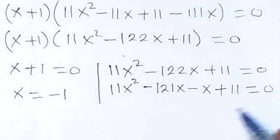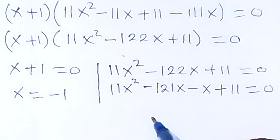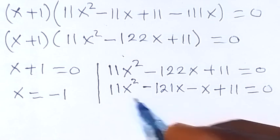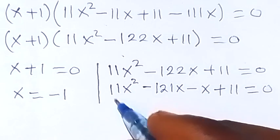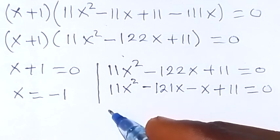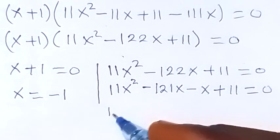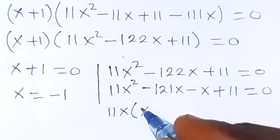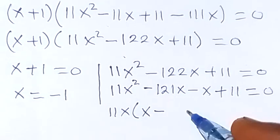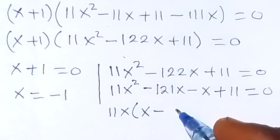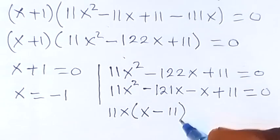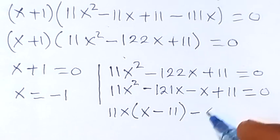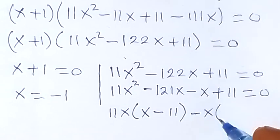We rewrite as 11x² − 121x − x + 11 = 0. Grouping and factoring: from the first pair, 11x is common, giving 11x(x − 11); from the second pair, minus 1 is common.